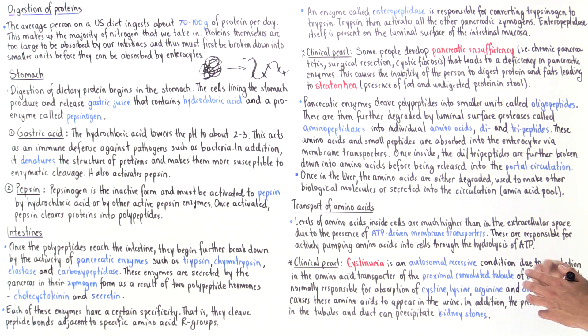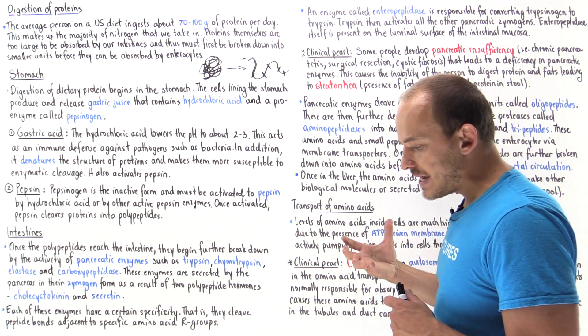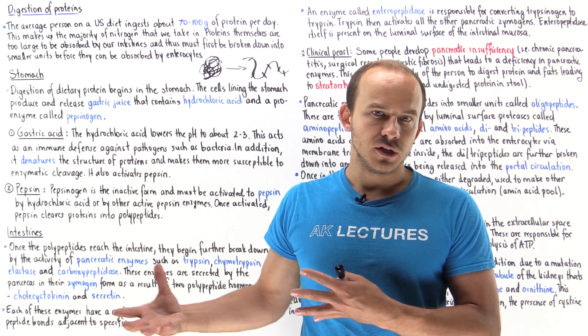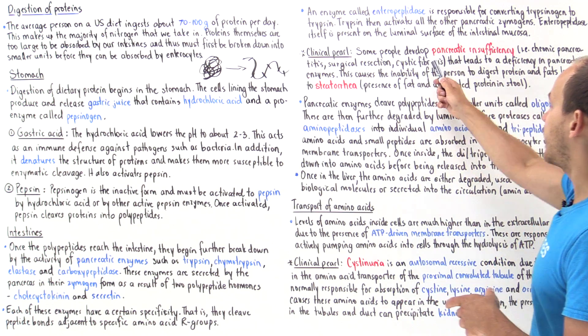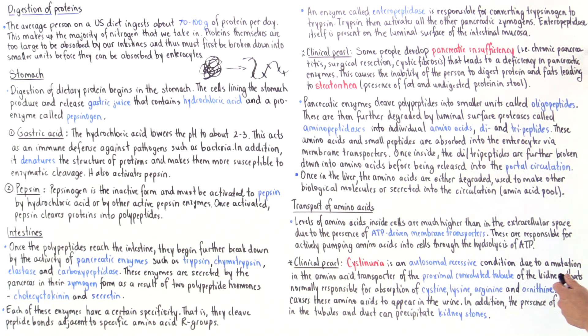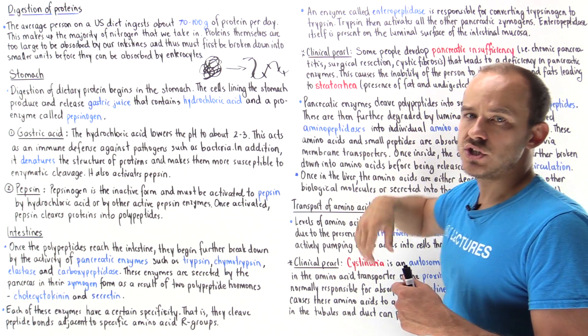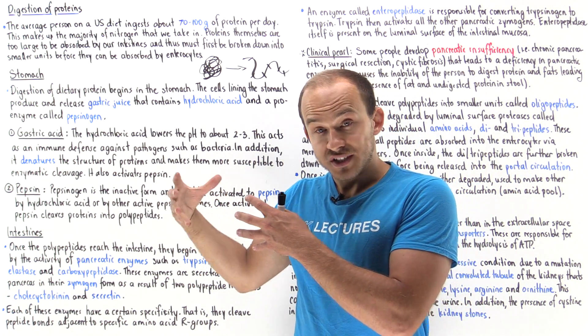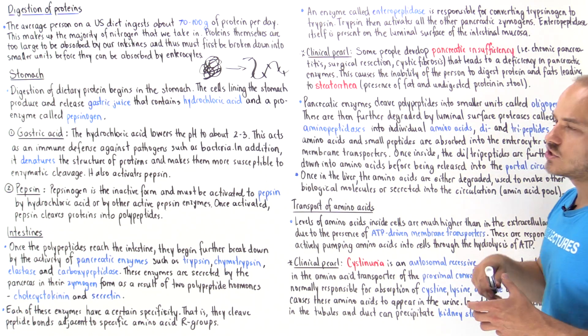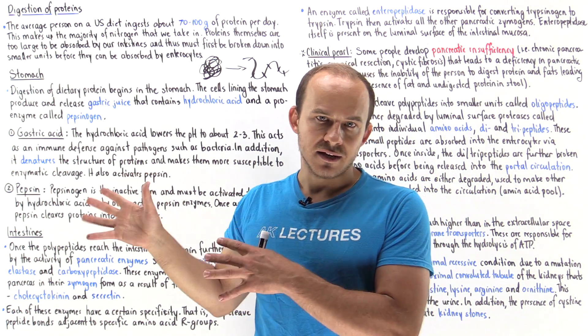I want to pause for a moment and talk about an important clinical pearl. What happens if a patient's pancreas stops functioning? If the pancreas isn't functioning very well—this is what we call pancreatic insufficiency—this is seen in patients with chronic pancreatitis, in patients who have a resection of the pancreas because of a surgical procedure, in patients with cystic fibrosis, and other conditions.